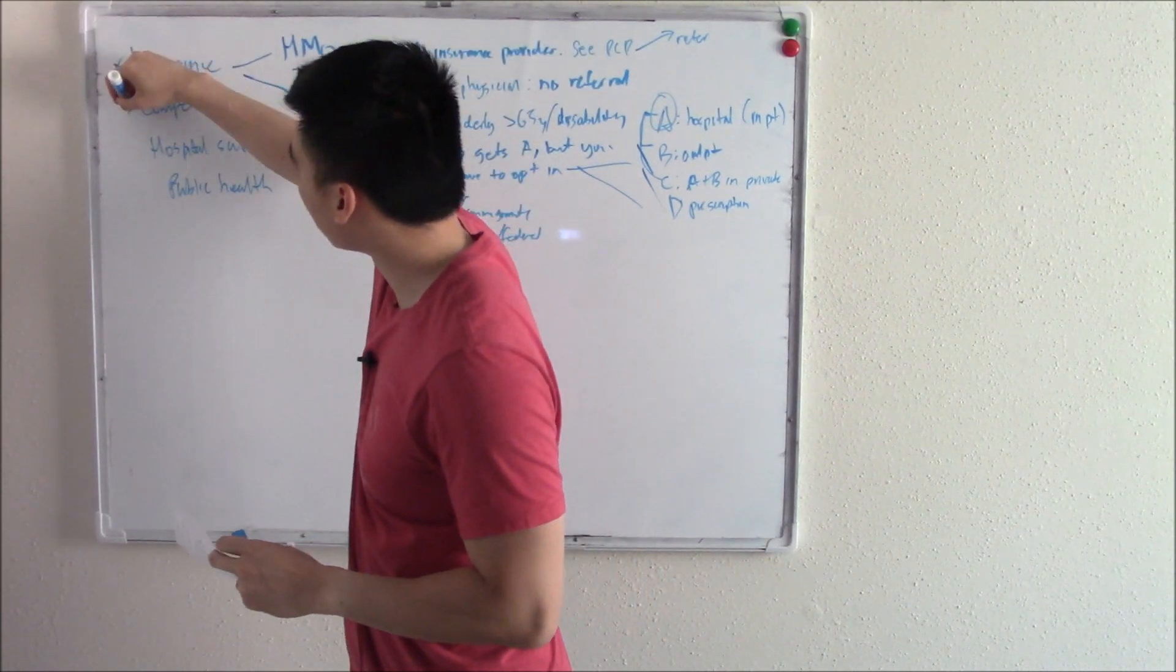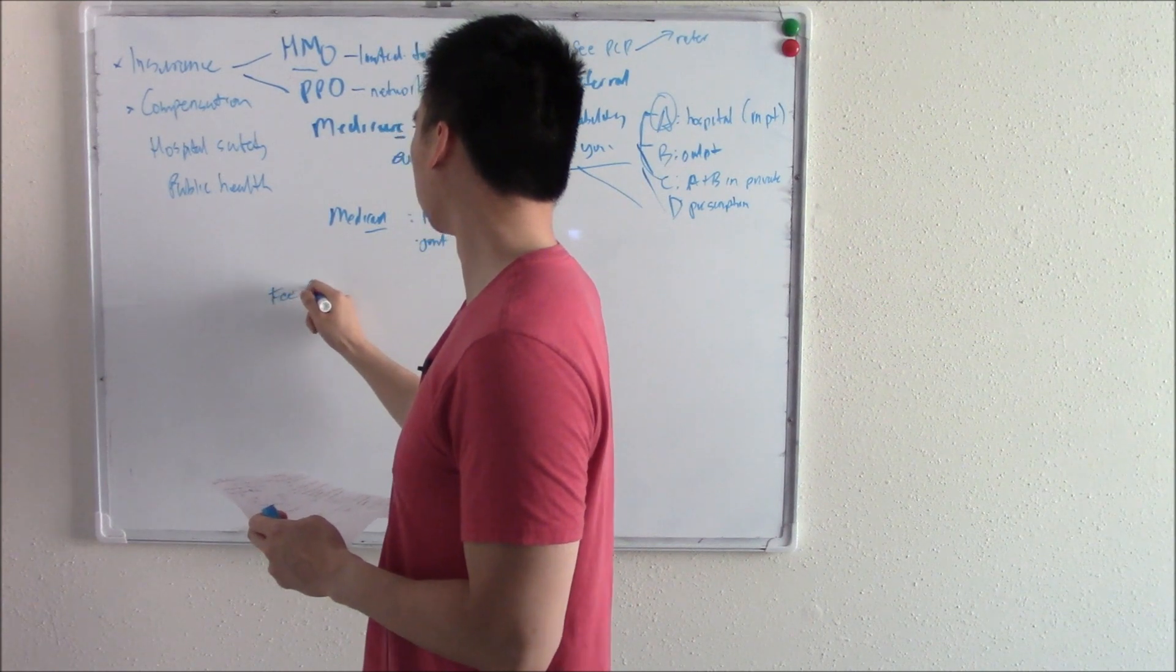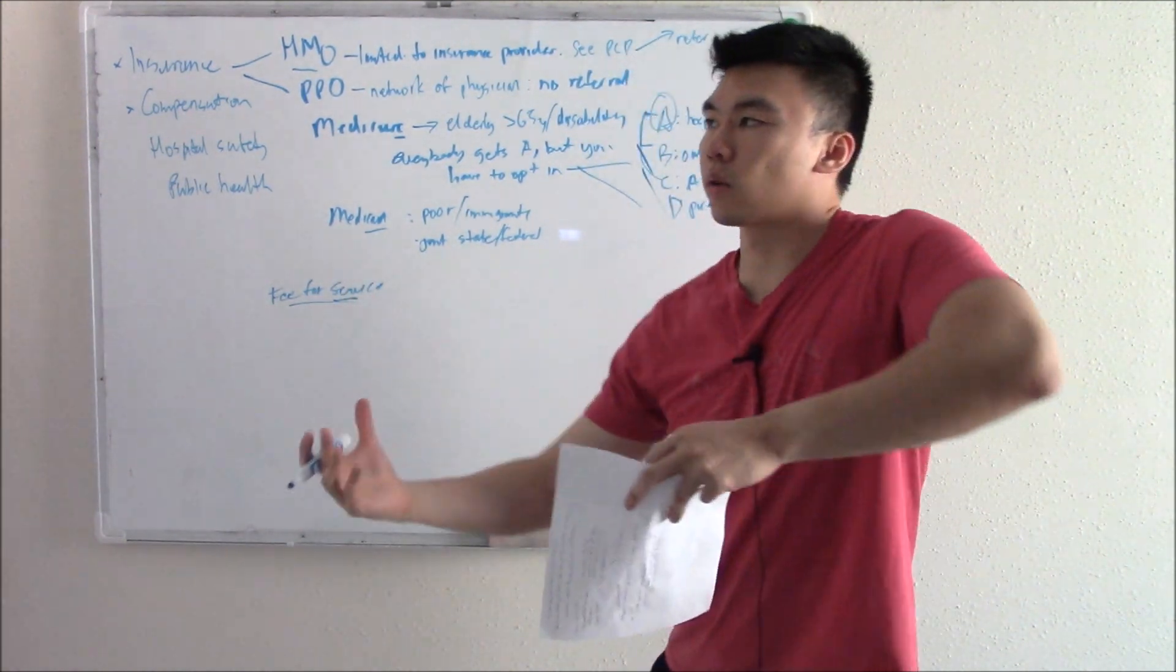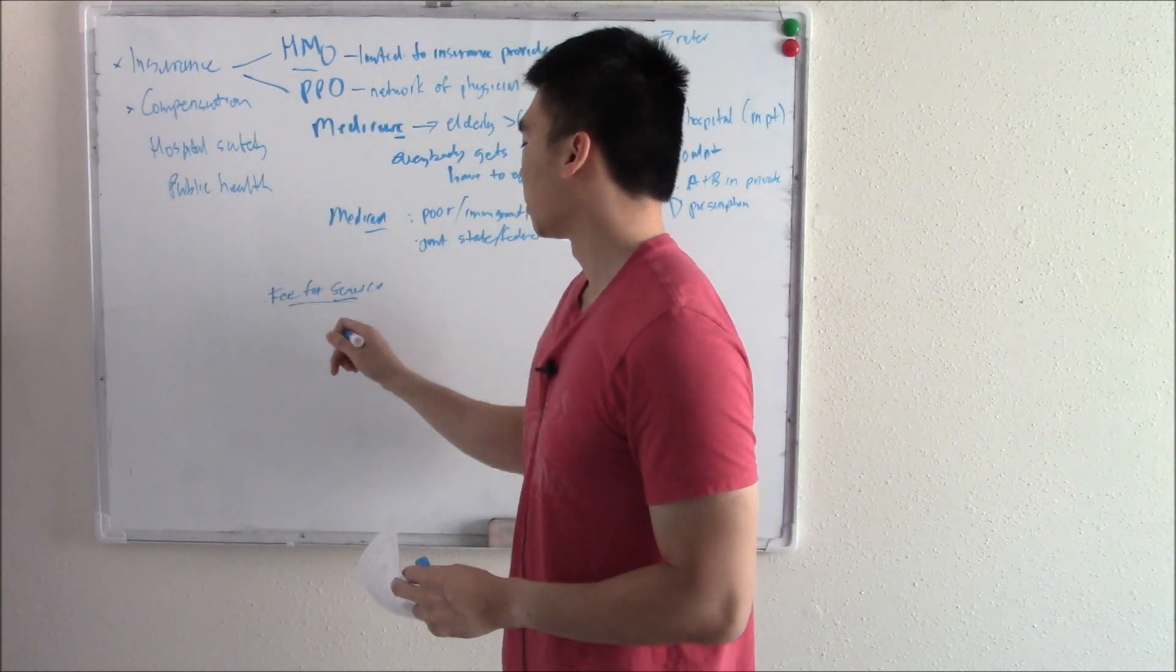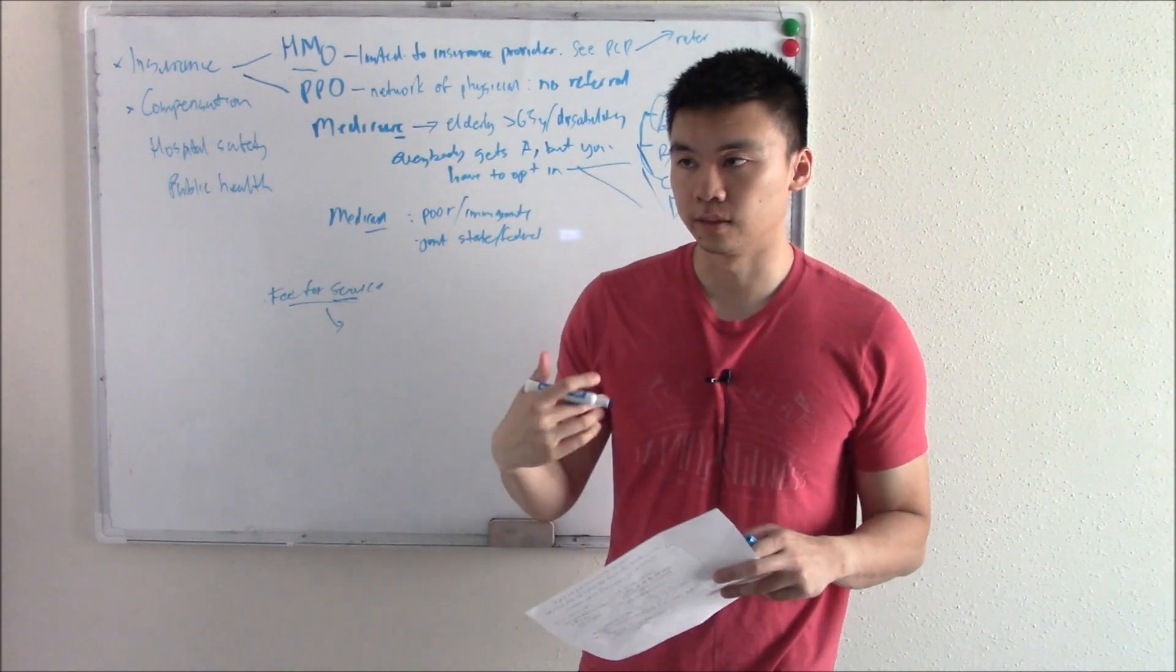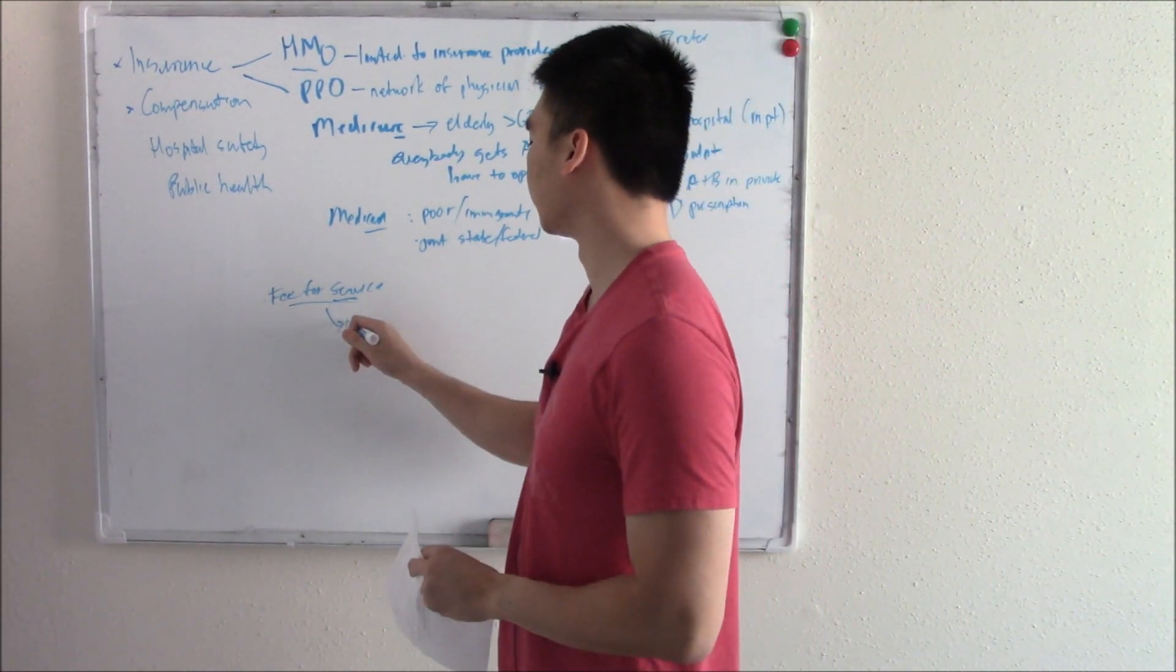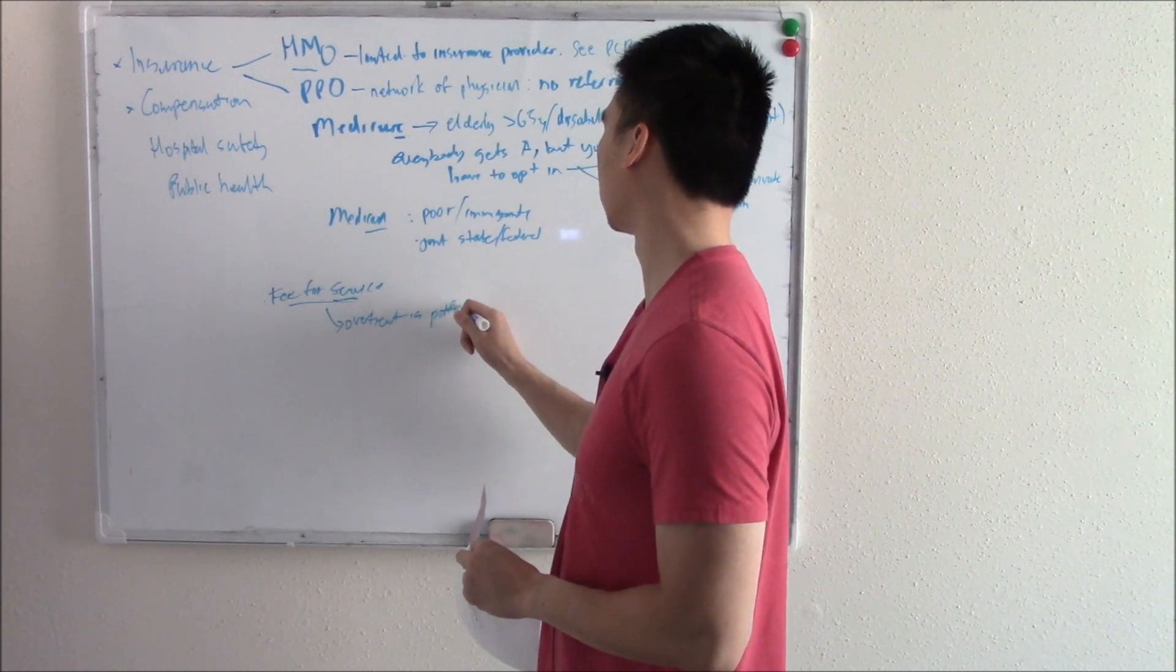Let's talk about compensation. Physician compensation. There are many ways physicians get paid. There's fee for service and that is exactly what it sounds like. You get money depending on what service you provide. Now we're going to talk about what kind of pitfalls for all these different types of compensation. The pitfall for this is that some physicians might overtreat, might give extra services or extra treatment that might not be necessary, but they get paid for it. So they want to overtreat. Overtreat is pitfall. Something to watch out for.